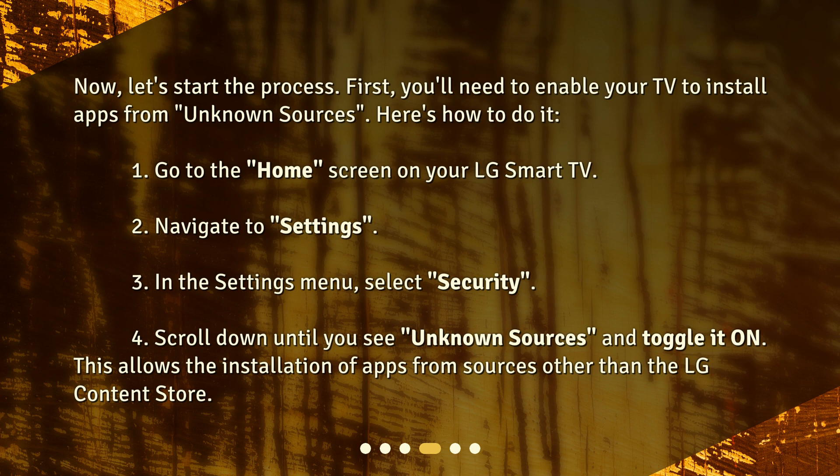1. Go to the Home screen on your LG Smart TV. 2. Navigate to Settings. 3. In the Settings menu, select Security. 4. Scroll down until you see Unknown Sources and toggle it on. This allows the installation of apps from sources other than the LG Content Store.